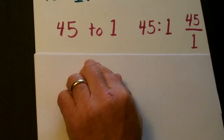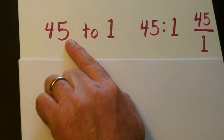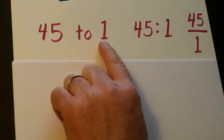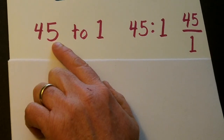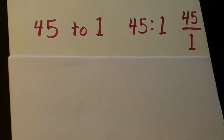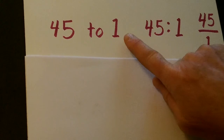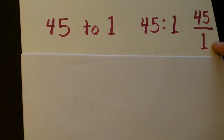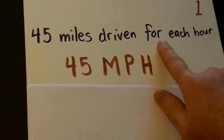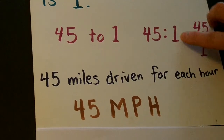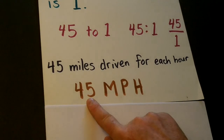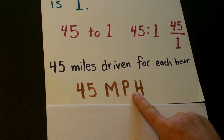For example, a car averaging 45 miles for every one hour it drives — this is a rate. This would be 45 MPH, but we can write it as a ratio. In all rates, the second number is always equal to one. So 45 miles driven for each hour — we can say 45 miles per each hour.